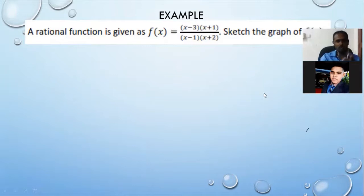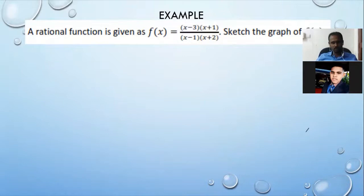I've taken the example from the worksheet that was given to you. Most of you got it correct and got full marks. The function is f(x) = (x−3)(x+1) / ((x−1)(x+2)). This is a balanced function — let me show you why.